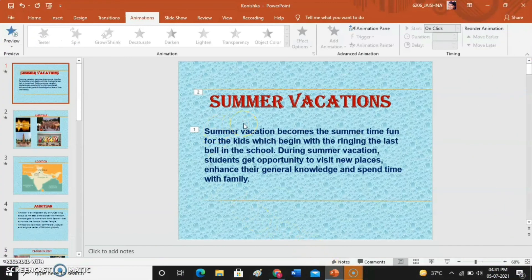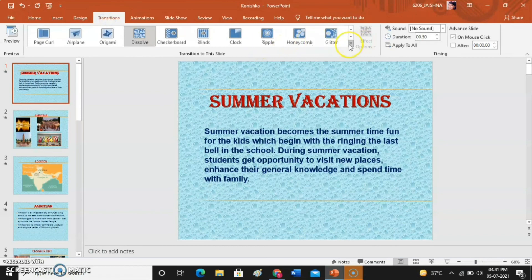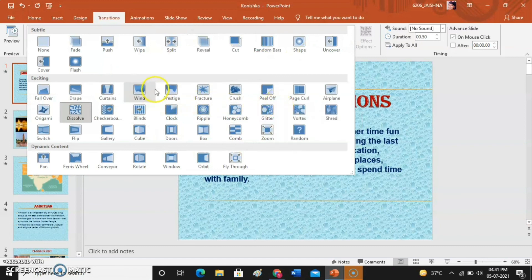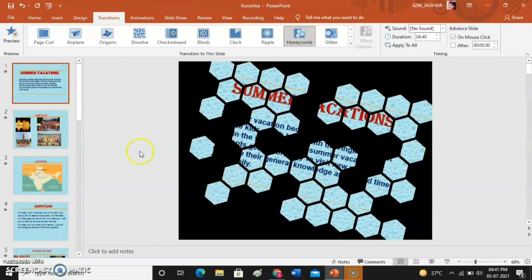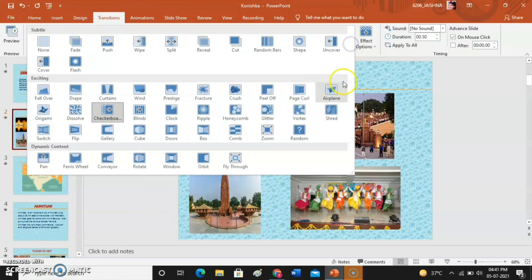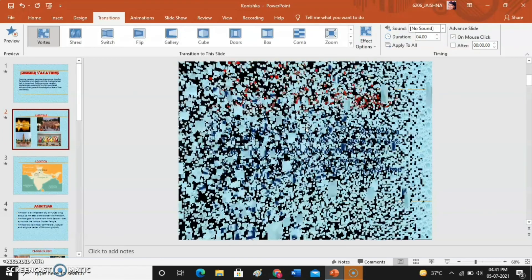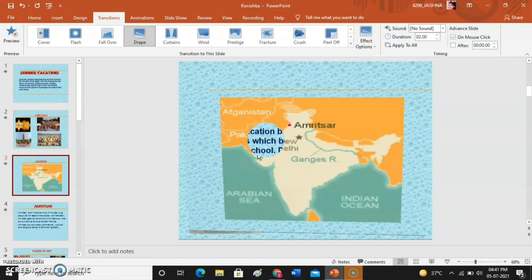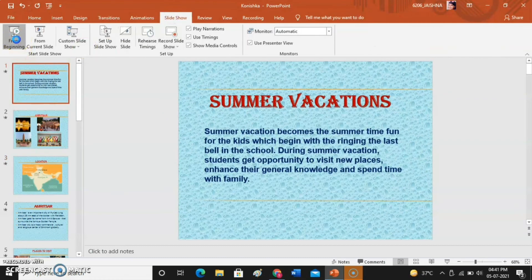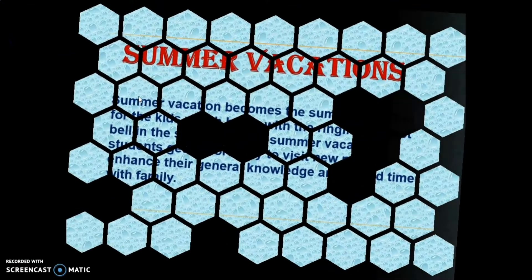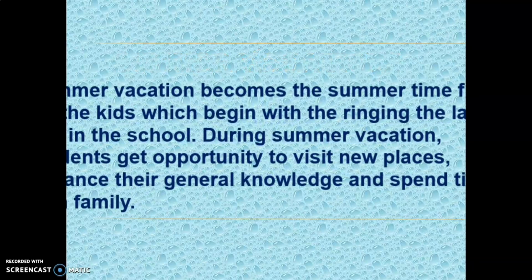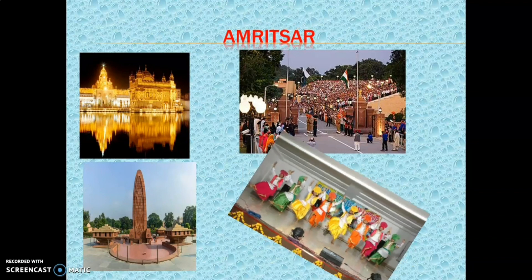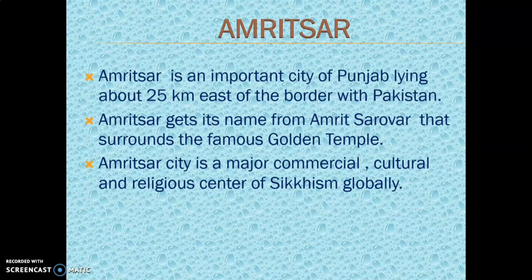Now we will see how to apply transition effects. Click on the drop-down arrow in the Transitions tab — you will find many options. For example, select Honeycomb for the first slide and preview it. For the next slide, click on the drop-down and select Vortex. Then go to Slide Show and click From Beginning. Press Enter — the animation effects start on the first slide. Press Enter again — the second slide appears with its transition effect. The transition and animation effects are now complete.